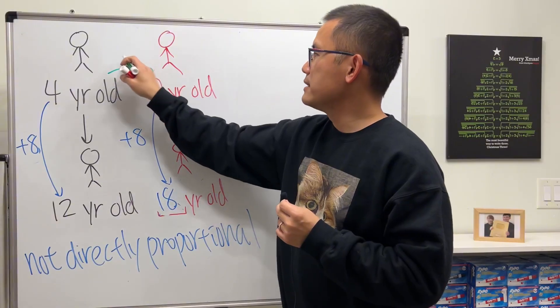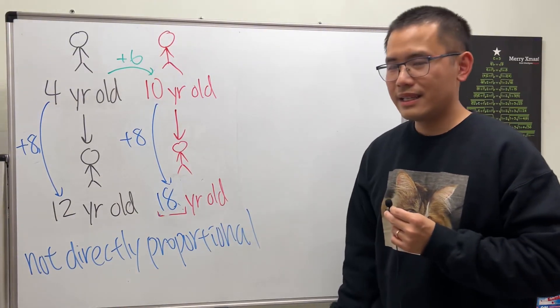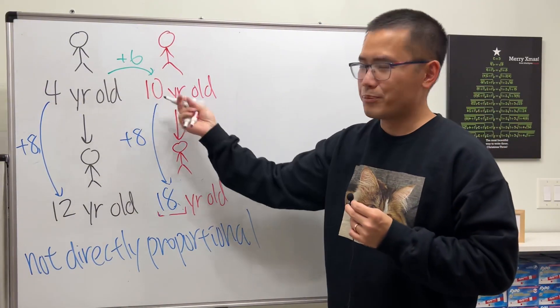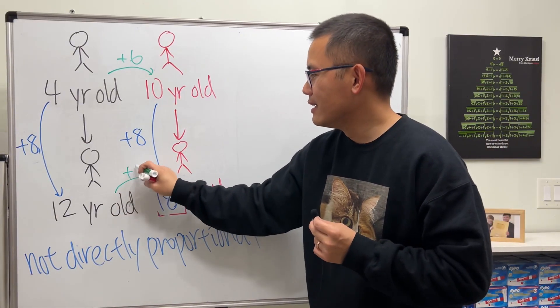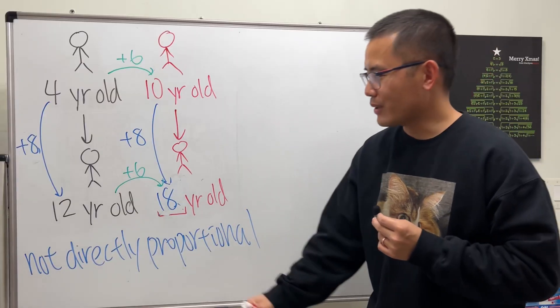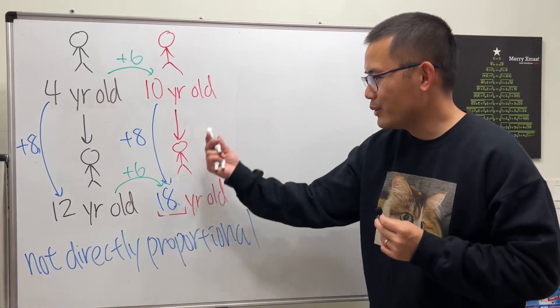Four years old versus 10 years old differ by six. And just imagine they are brothers or sisters, after eight years they will still have to differ by six years. So if you have 12 you add six to it, you get 18 and you're done.